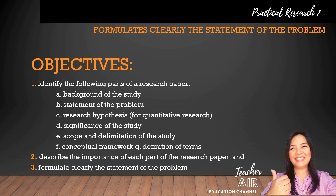Here are today's objectives. Number one, identify the following parts of a research paper: A) background of the study, B) statement of the problem, C) research hypothesis for quantitative research, D) significance of the study, E) scope and delimitation of the study, F) conceptual framework, and G) definition of terms. Number two, describe the importance of each part of the research paper. And lastly, formulate clearly the statement of the problem.